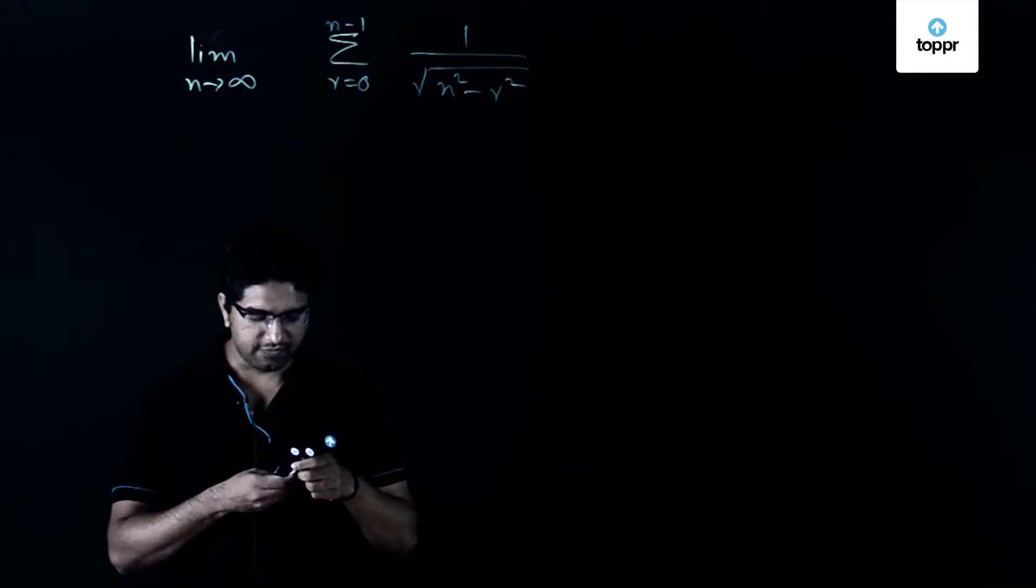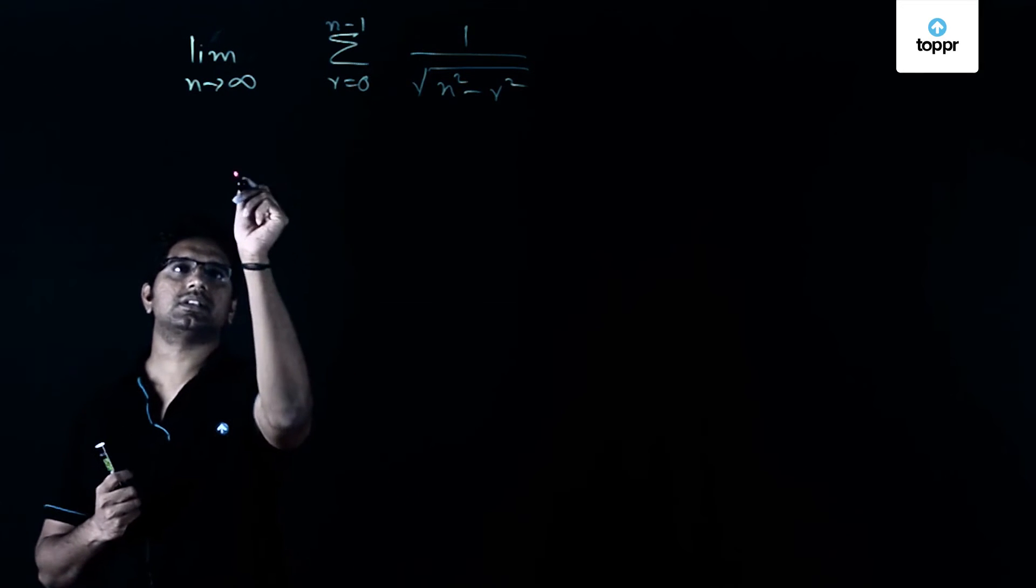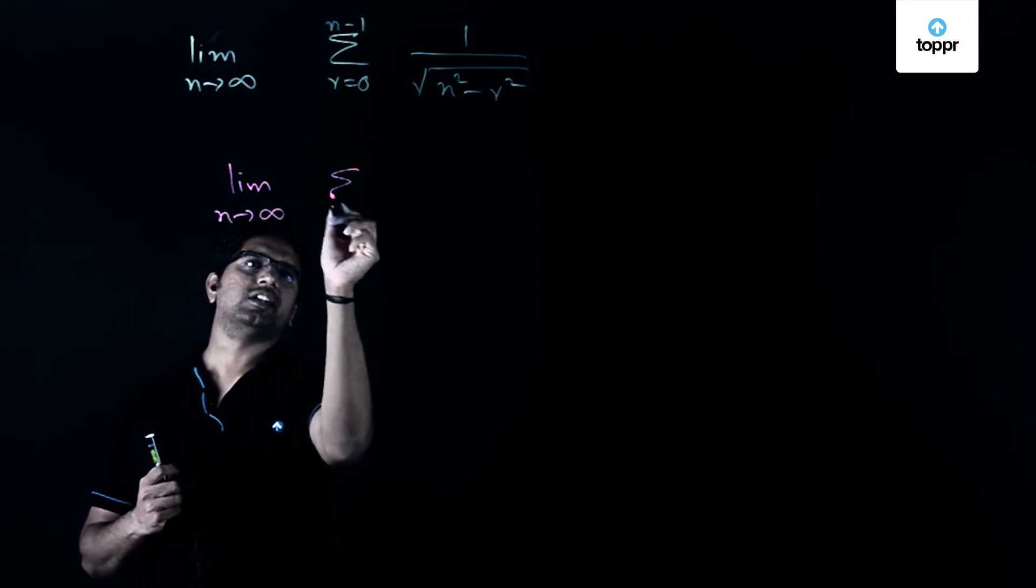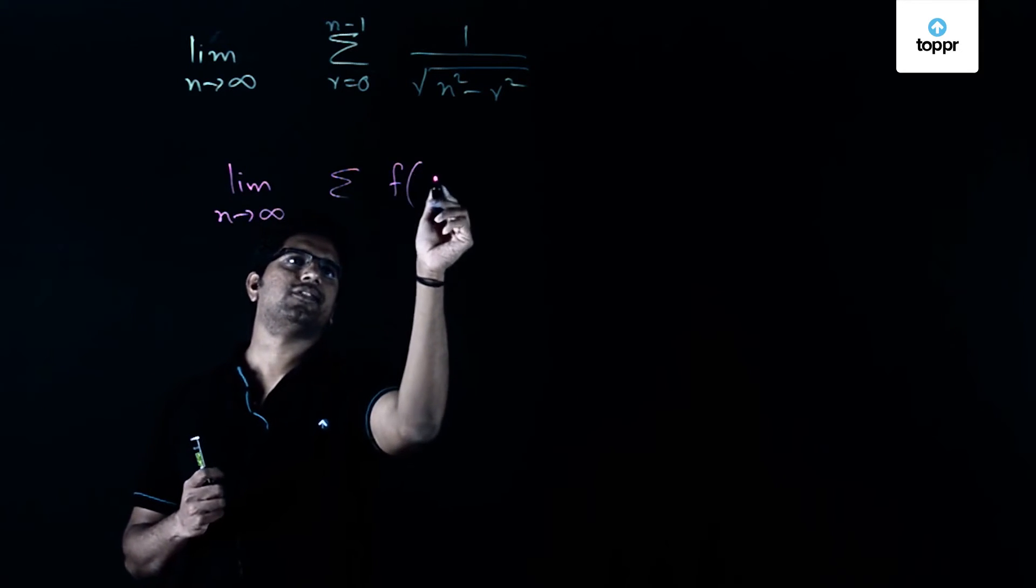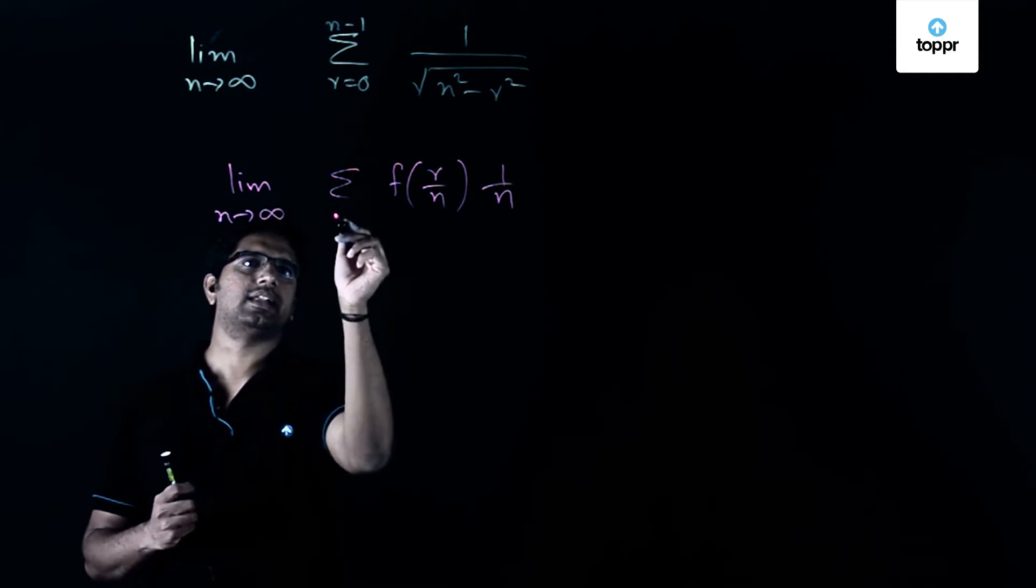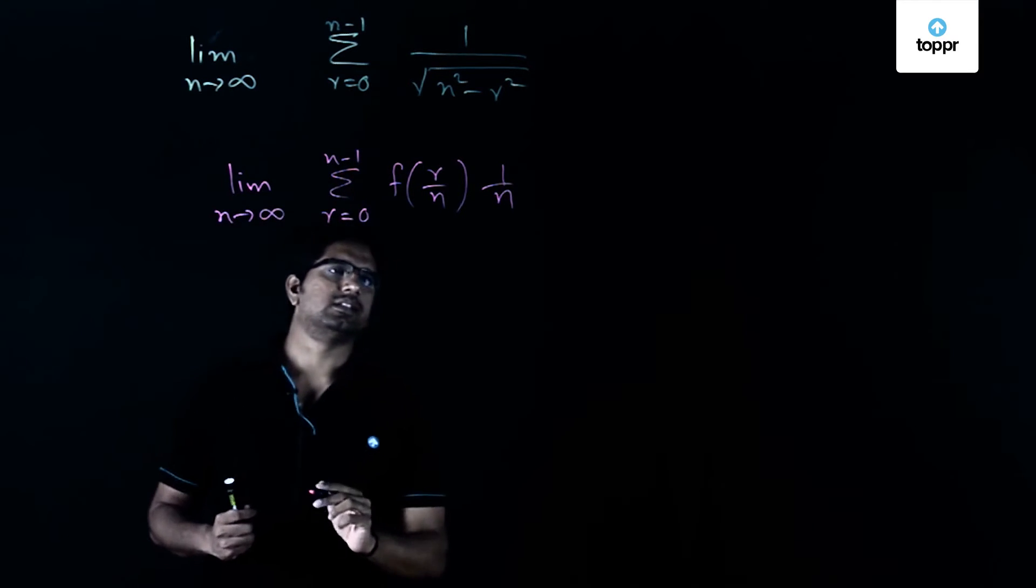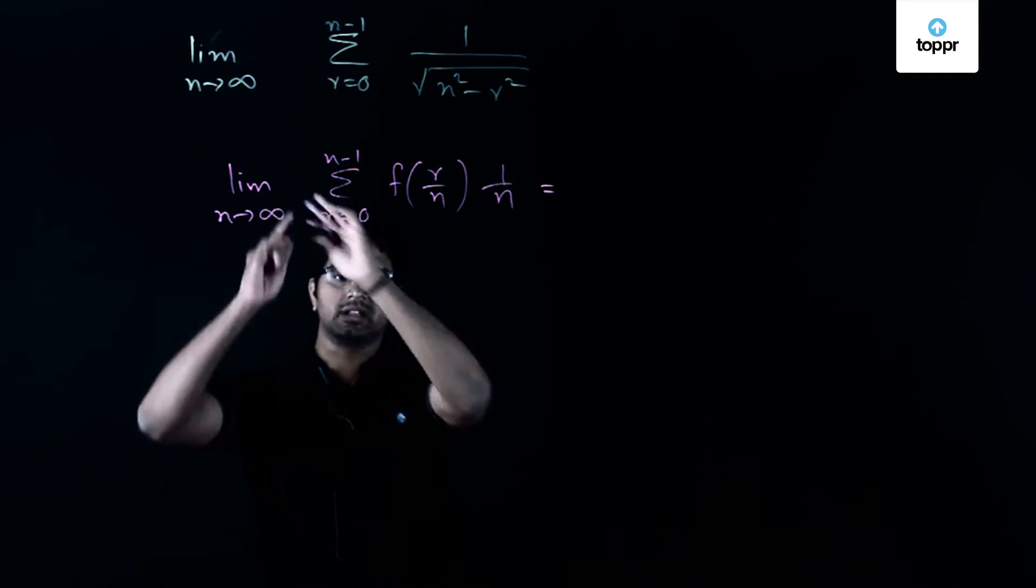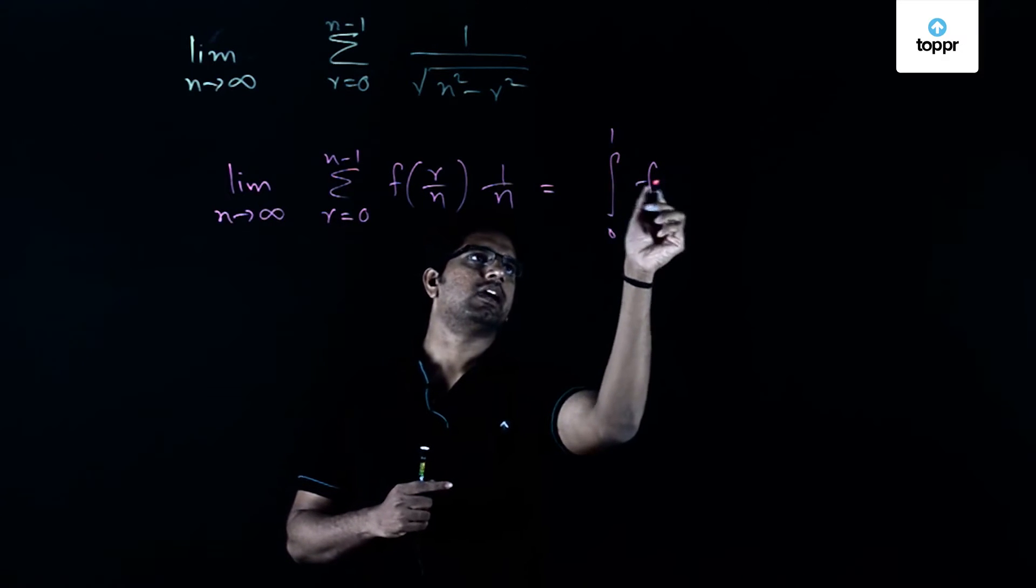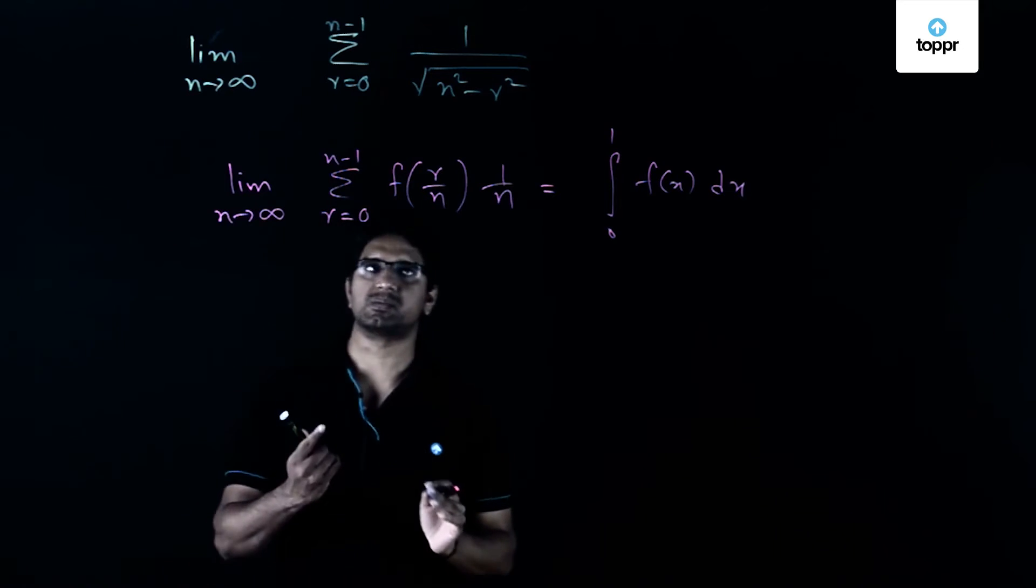For that we may need to make use of the fundamental principle of integration: the limit n tends to infinity of the sum of f of r by n times 1 by n, where r ranges from 0 to n minus 1, this sum actually converges to the integral 0 to 1 f of x dx. This is the thing which we have to make use of in this problem.